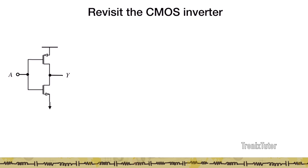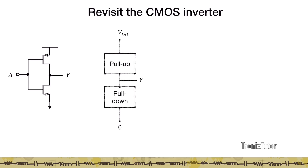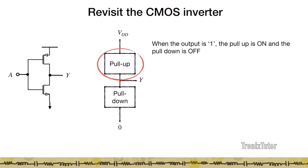Let's revisit the CMOS inverter. The CMOS inverter consists of a PMOS and NMOS with output Y connected to the drains of the two transistors and input A connected to the gates. This inverter can be thought of as a pull-up transistor and a pull-down transistor, with the pull-up connected to VDD and the pull-down connected to zero. When the output is a one, the pull-up is shorted and the pull-down is open, shorting the output to VDD. Since we want to transmit VDD, we use a PMOS for the pull-up.